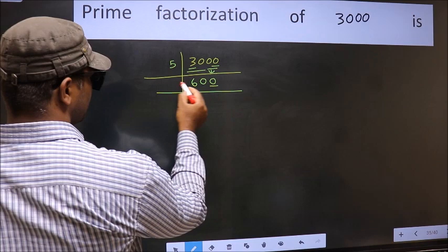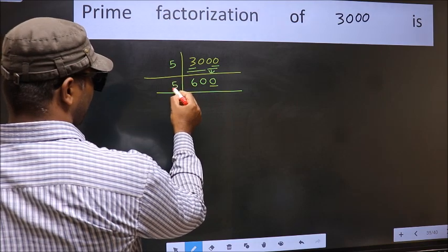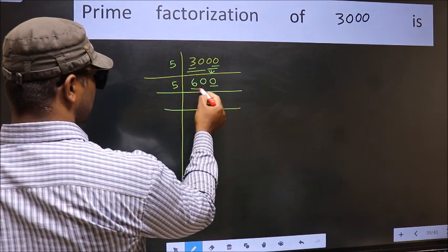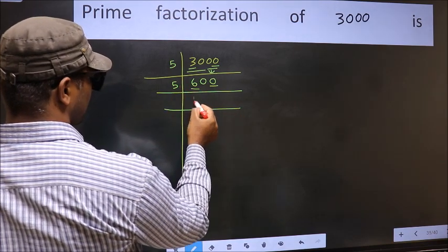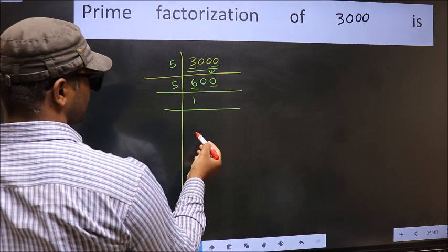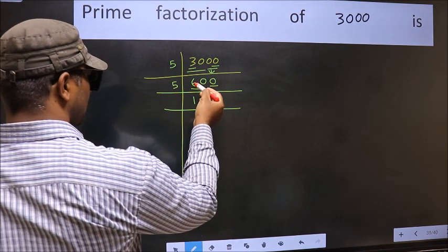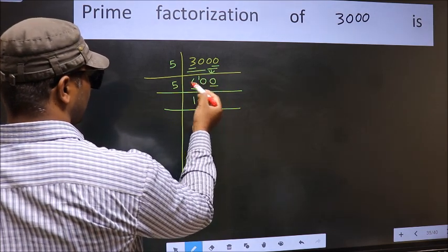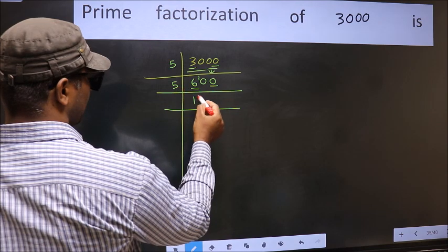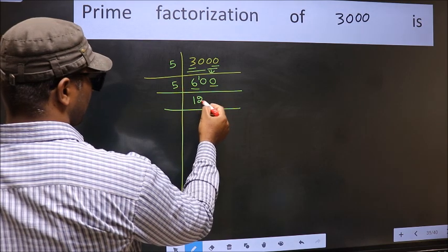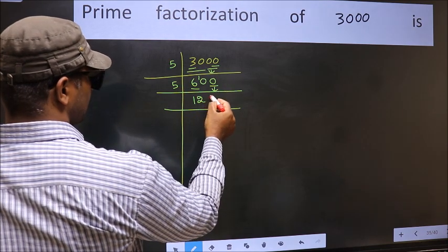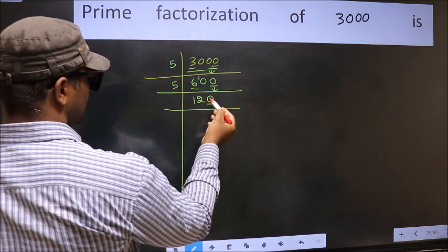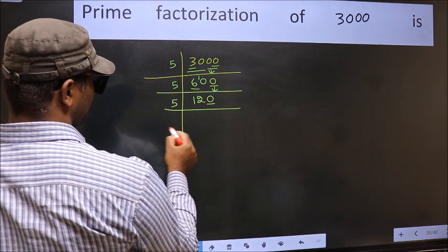Now the last digit is 0, so take 5. First number 6 — a number close to 6 in the 5 table is 5 once 5. 6 minus 5 is 1, carried forward 10. When do we get 10 in the 5 table? 5, 2 is 10. This 0 comes down as it is.